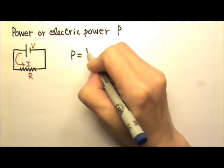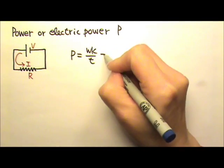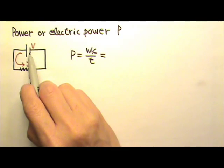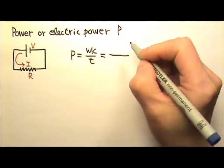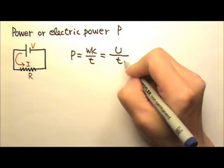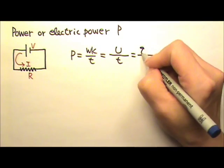Power equals work over time. The work done by the battery when it pumps charges is turned into the potential energy of the charges, and U equals QV.